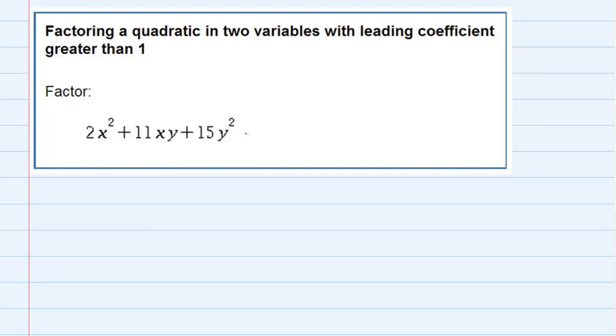Factoring a quadratic in two variables with leading coefficient greater than one. We're asked to factor this quadratic and it does have both an x and a y variable. In a previous video of one variable we showed both the AC method and trial and error. For this example I'm just going to do trial and error.